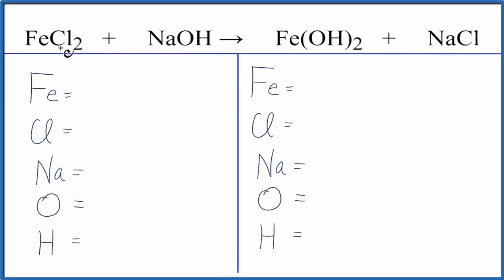In this video, we'll balance the equation FeCl2 plus NaOH. That's iron 2 chloride plus sodium hydroxide. Let's count the atoms up on each side of the equation.